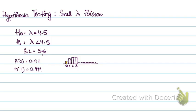So x less than 1 — I can simply say that x equals 0 is my critical region. Any observed value that is above 0, I will accept my null hypothesis that lambda has not decreased. But if my observed value is 0, I'd reject the null hypothesis and accept that we have evidence to prove that our lambda has decreased. So this is when your critical region is on the left-hand side, when your alternative hypothesis is that lambda has decreased.